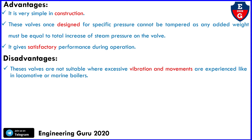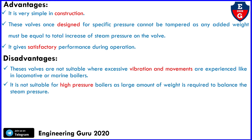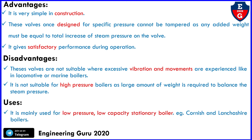Disadvantages: this valve is not suitable where excessive vibration and movements are experienced, such as in locomotive or marine boilers. It is also not suitable for high pressure boilers, as a large amount of weight is required to balance the steam pressure. Uses: it is mainly used for low pressure, low capacity stationary boilers — for example, Cornish and Lancashire boilers.